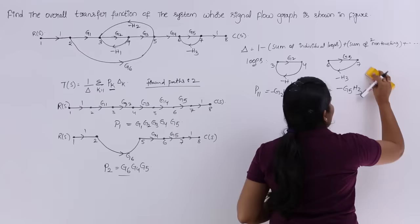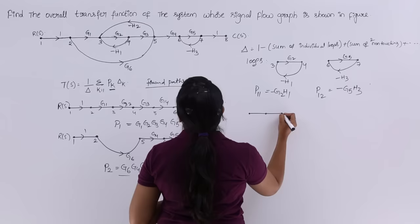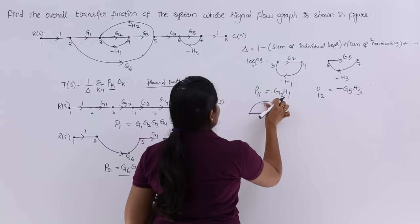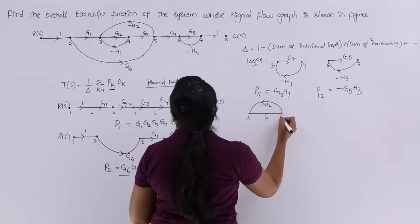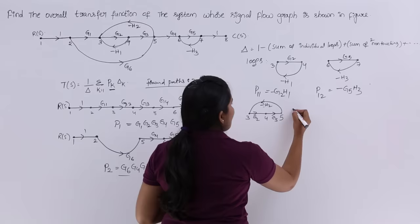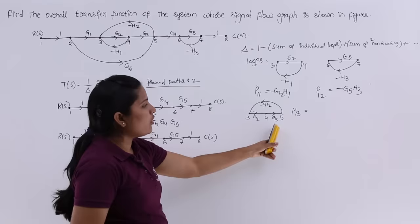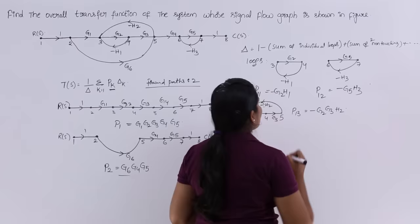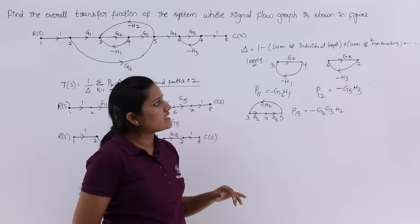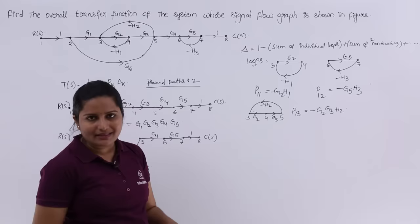Redrawing: the third loop goes through nodes 3, 4, 5 with gains G2 and G3 and feedback −H2. The third individual loop gain P13 = −G2·G3·H2. Sum of all individual loops is P11 + P12 + P13. Now we check for two non-touching loops. We have three loops total — are any pairs non-touching?